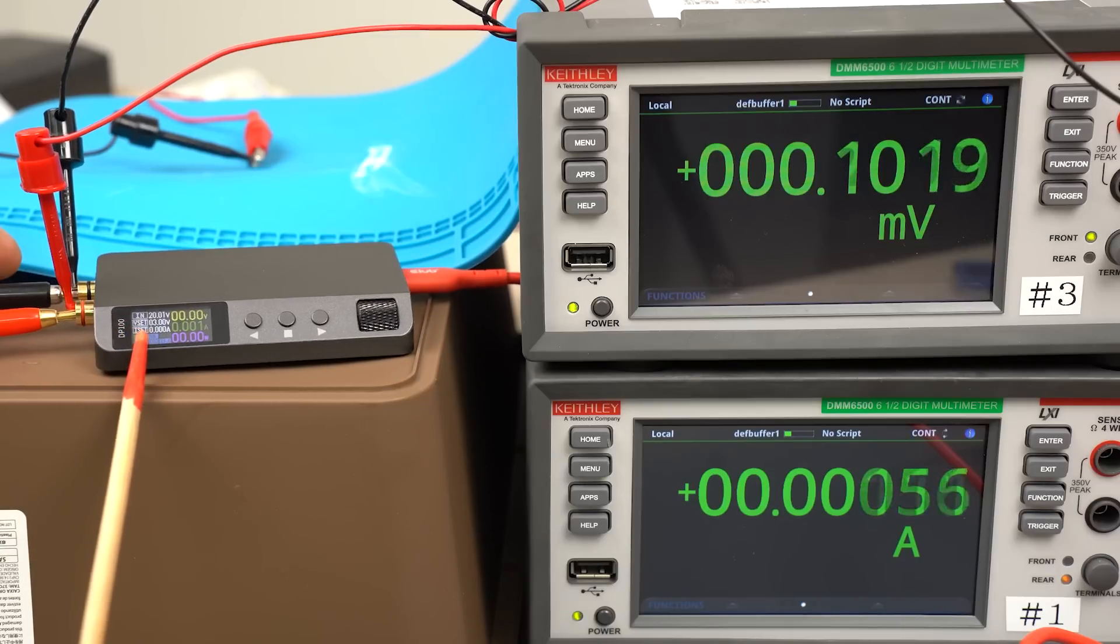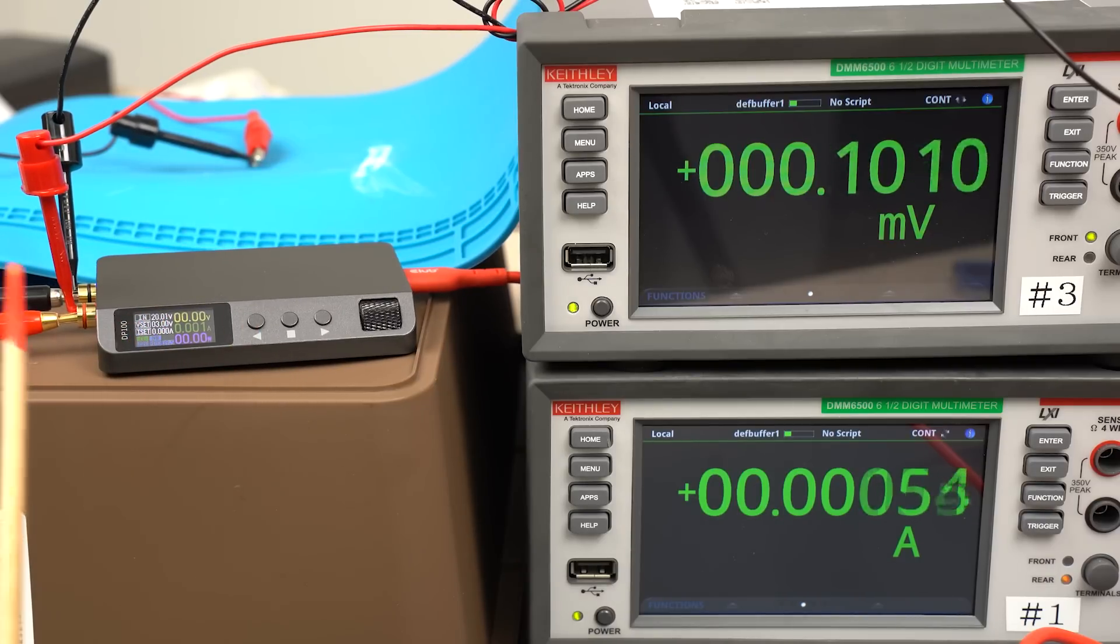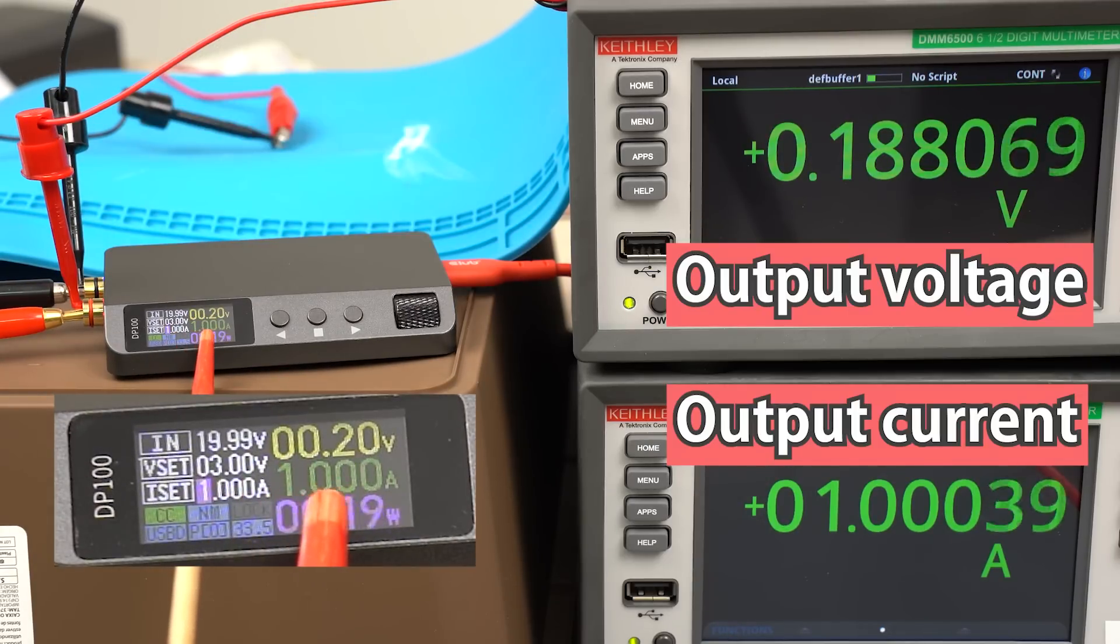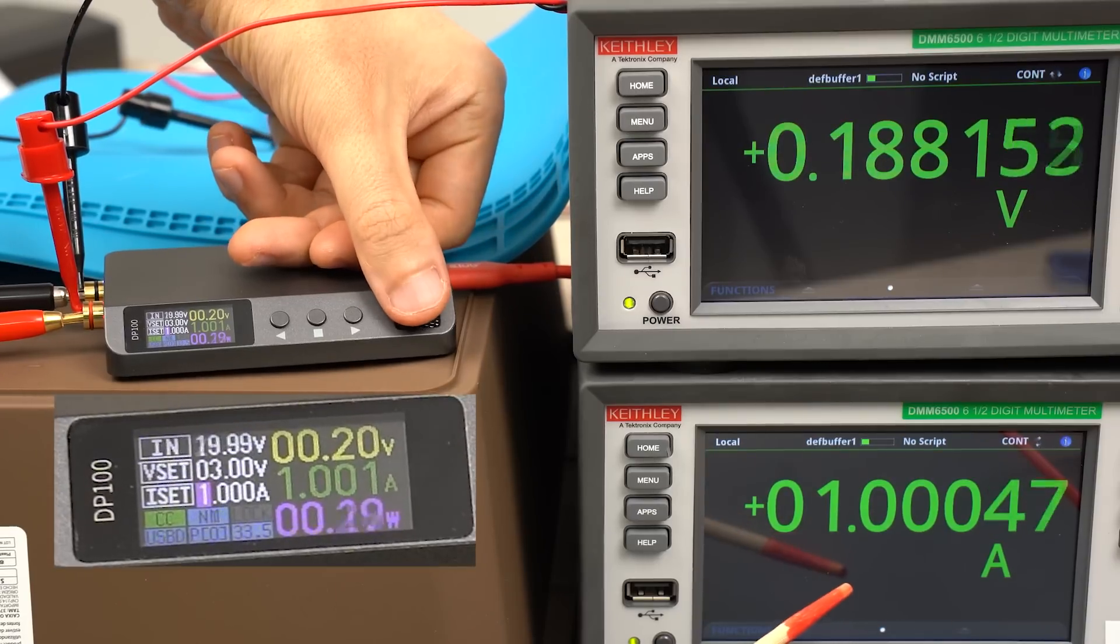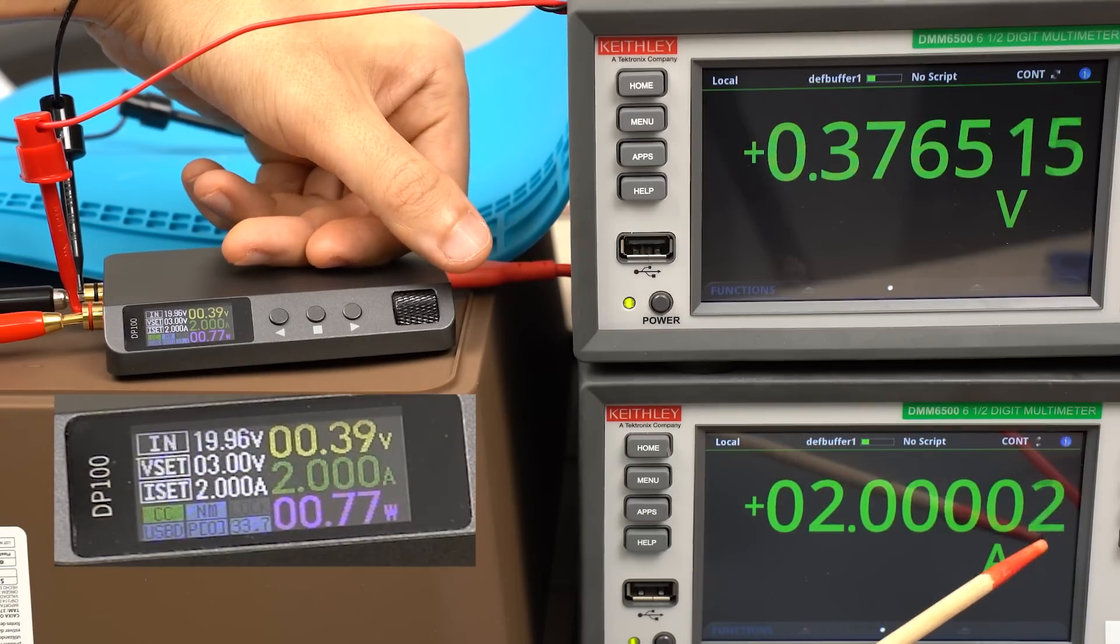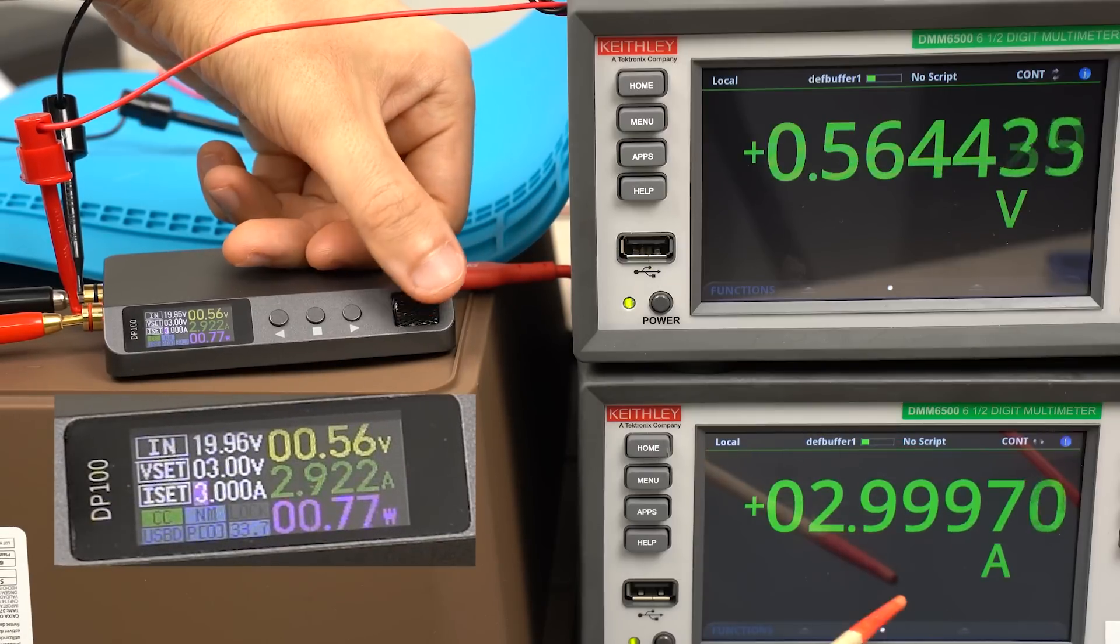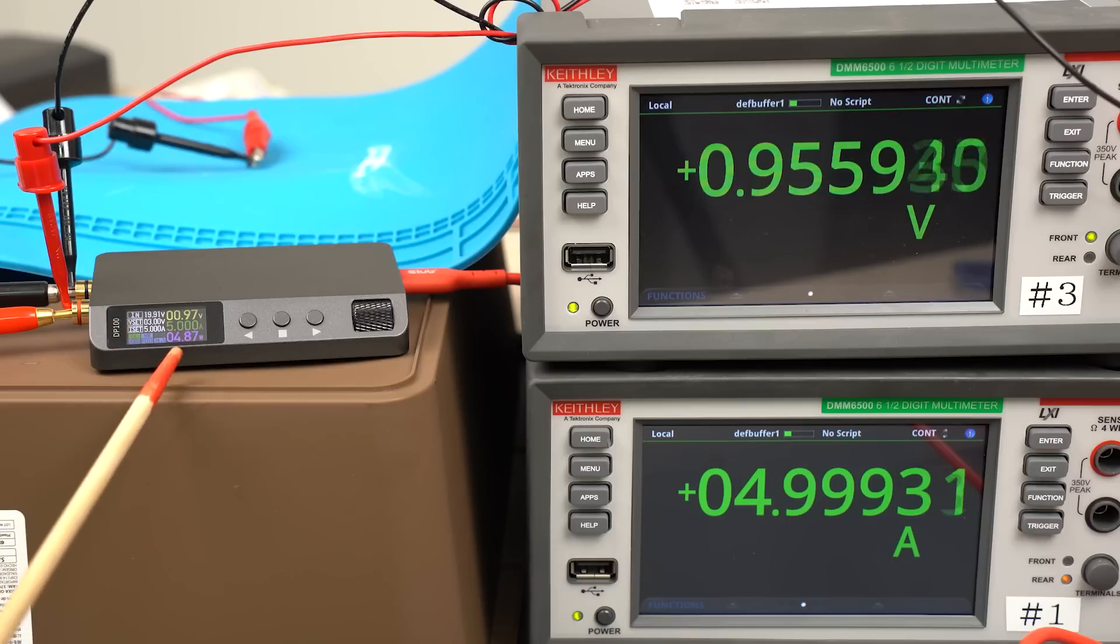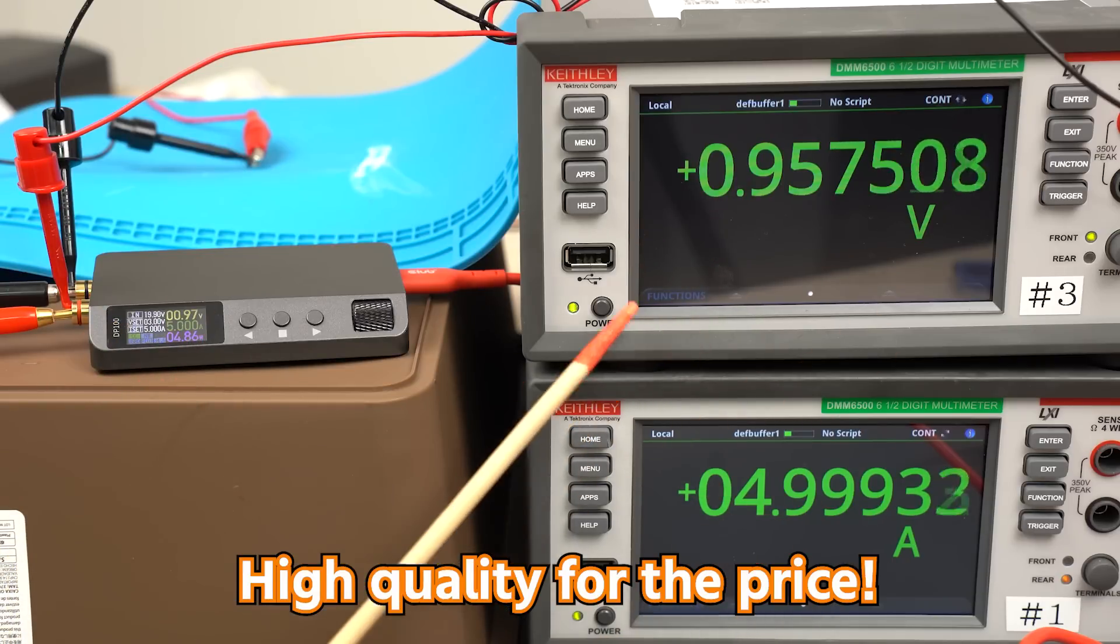Next, let's try CC mode. We will look at how accurate the output current is on constant current mode. When the current is set to 1A, the display says 1.001A. The 4th and 5th decimal places are not stable. Let's raise to 2A. 2.00000. It's stable up to 4th place. Pretty good. I also set to 3, 4, and 5A. I confirm that the voltage and current set on the power supply mostly match the actual amount of voltage and current.